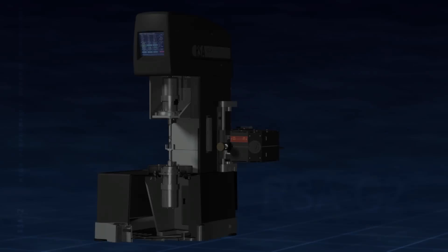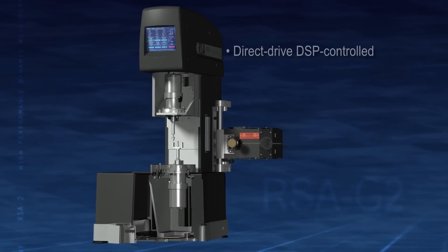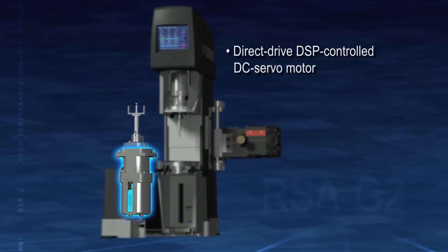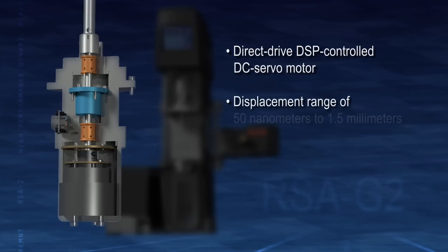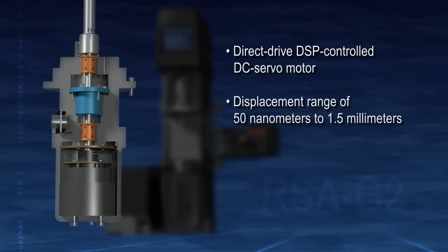The RSA-G2 applies strain via a direct-drive DSP-controlled DC servo motor with a displacement range of 50 nanometers to 1.5 millimeters.